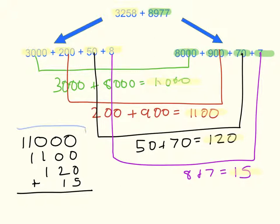I wrote them in a column to make sure that I lined up the place values. 0 plus 0 plus 0 plus 5 is 5. 0 plus 0 plus 2 plus 1 is 3. 1 plus 1 is 2. 1 plus 1 is 2, and 1 is 1.